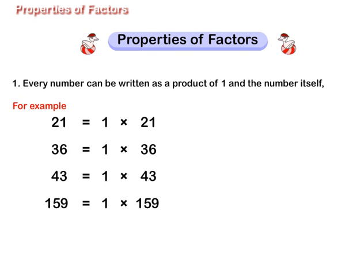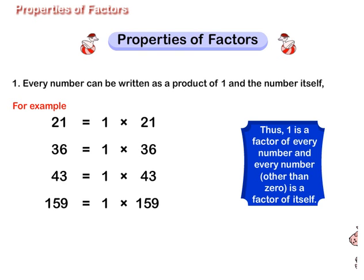159 is equal to 1 multiplied by 159. Thus, 1 is a factor of every number and every number other than 0 is a factor of itself.